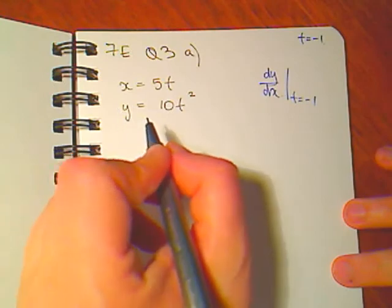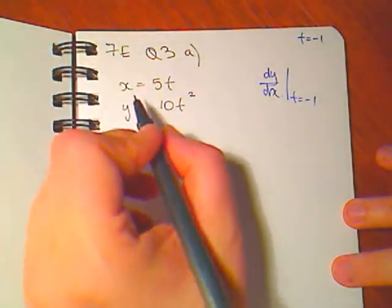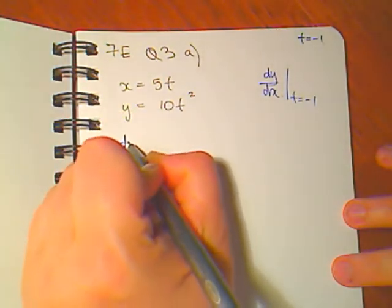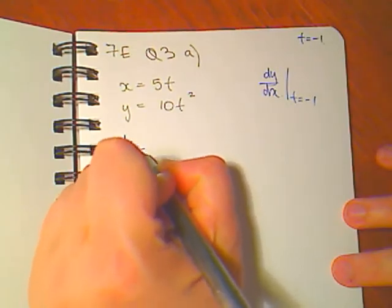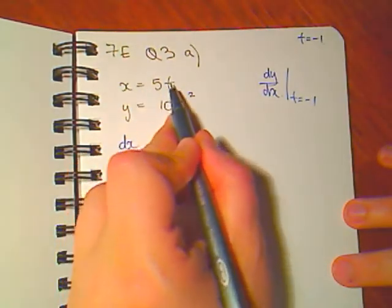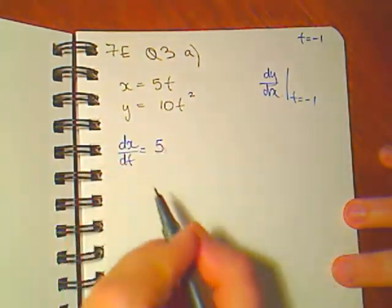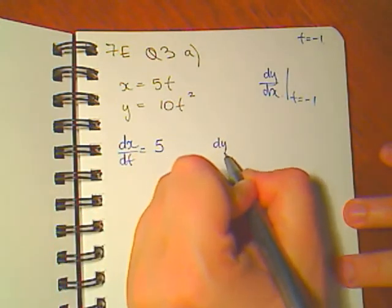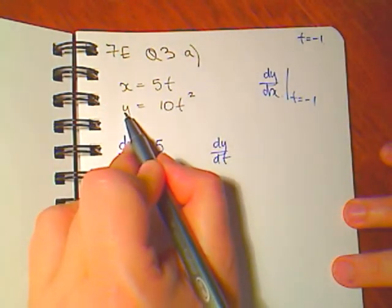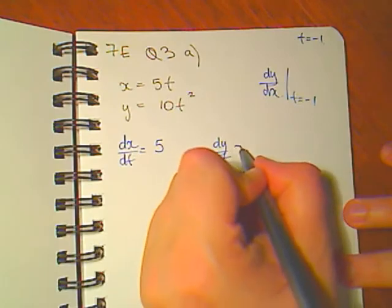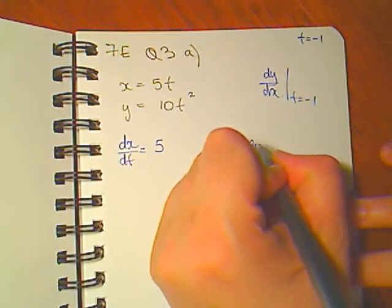So we're going to use the chain rule when we're doing parametric. If we're given x we can certainly find dx/dt. Derivative of x with respect to t is 5. We can also find dy/dt. The derivative of y with respect to t will be 20t.